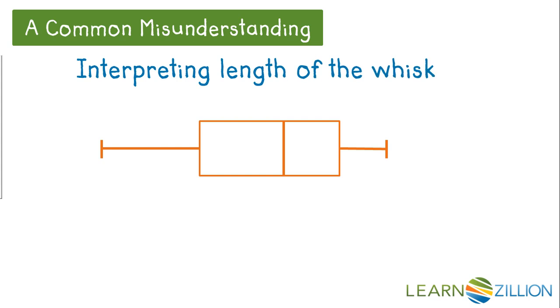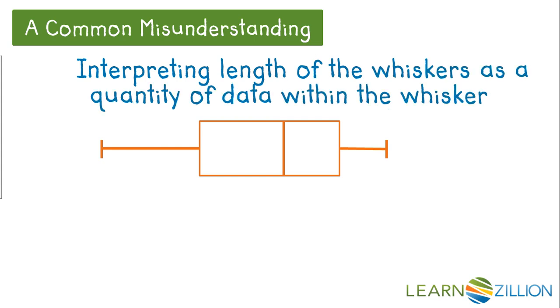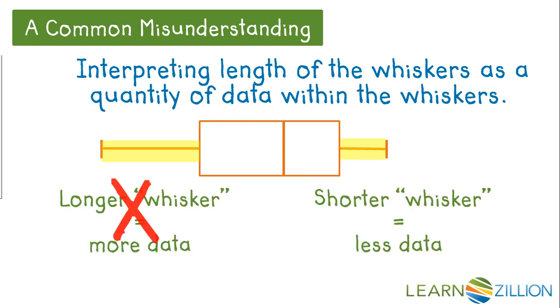A common misunderstanding is interpreting the length of the whiskers as a quantity of data within the whiskers, so the longer the whisker the more data, and the shorter the whisker the less data, but this is incorrect. Don't forget each section of the box plot contains a fourth or 25% of the data.